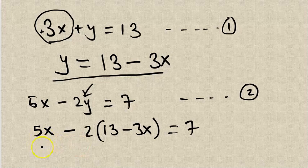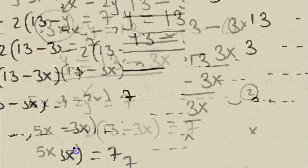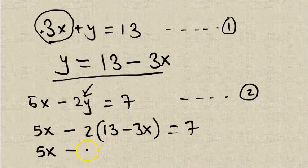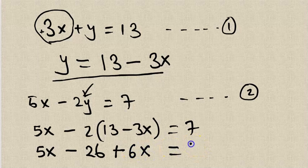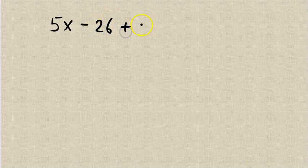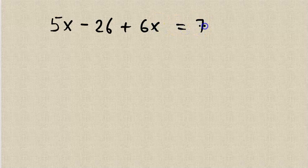So let me simplify this further. This is 5x minus 2 times 13, that is 26, minus times minus—you have minus 2 multiplied by minus 3x. So this time the sign flips because minus times minus is positive. So this becomes 6x equals 7. Now we collect like terms together.